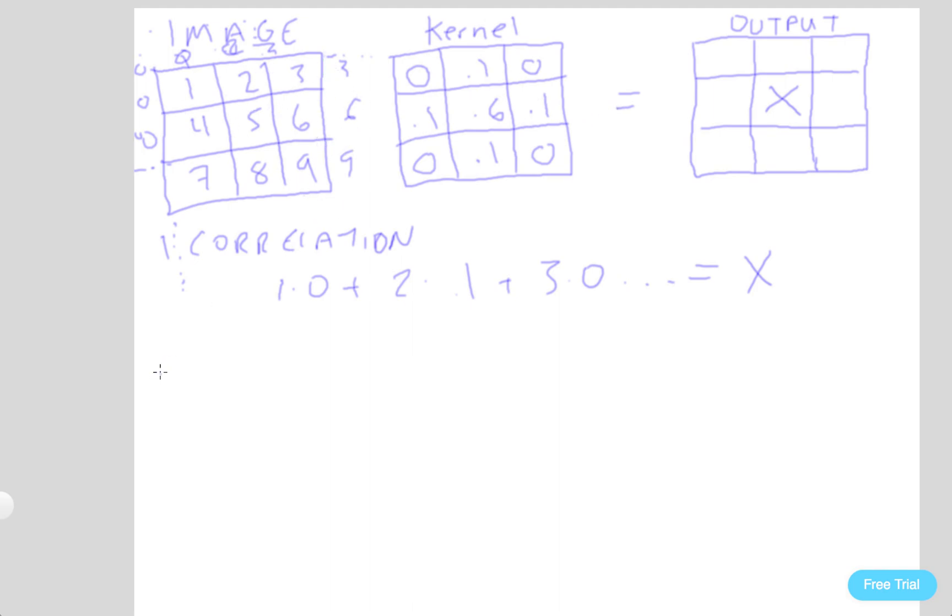Now let's talk about convolution, which is almost the same thing. Basically, this kernel, though, gets rotated 180 degrees, so if this is a1, this is a2, a3, b1, c1, you get the point for labeling what this kernel value is.